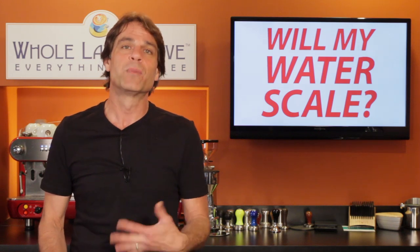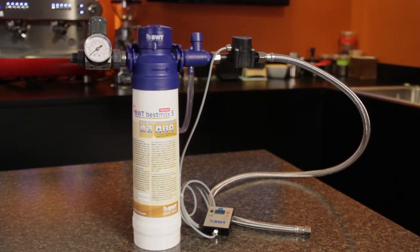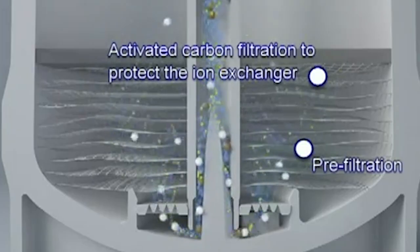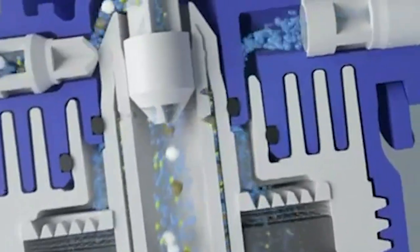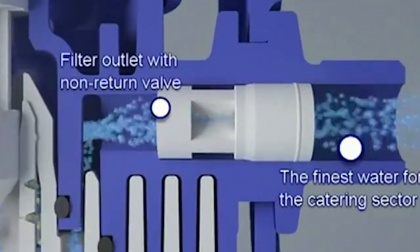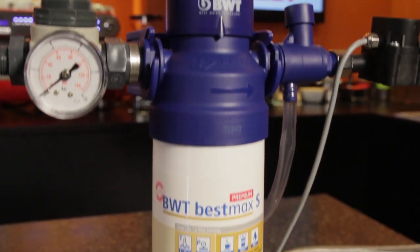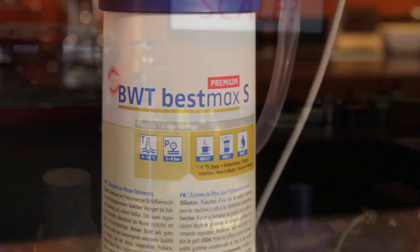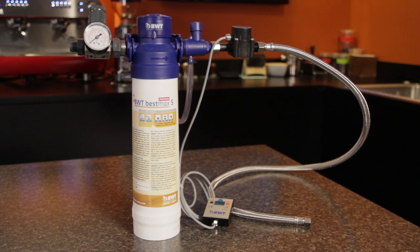For semi-automatic machines, a couple of options. For a plumbed-in prosumer-level machine, I'd go with an inline cartridge system using the BWT BestMax Premium filter. It has carbon filtration for chlorine removal, but its real benefit is a patented ion exchange section which replaces excess calcium with magnesium. This process reduces water hardness without adding sodium, which is what happens with most other water softening filters or systems. With proper use, the BWT BestMax Premium system provides a mineral level that maintains flavor without causing scale buildup — use this filter and you never have to descale your machine. It protects your investment, gives you peace of mind, and of course, great tasting espresso.